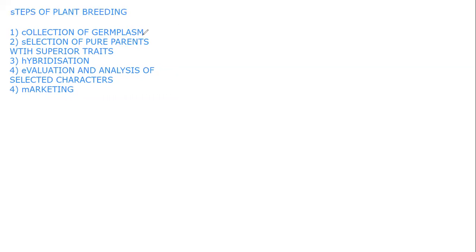Germplasm refers to the sum total of all the traits of a particular species. For example, India has many different rice varieties, each with different qualities. The collection of all these varieties — collecting, selecting, and storing them — is called germplasm. It is the collection of all the traits for a selected species. Conservation of germplasm is done in two ways: ex situ conservation and in situ conservation.